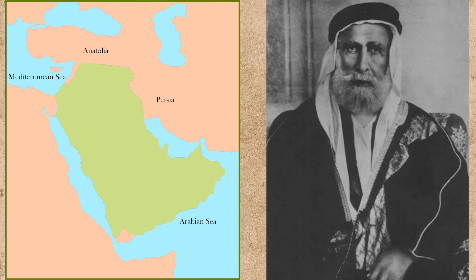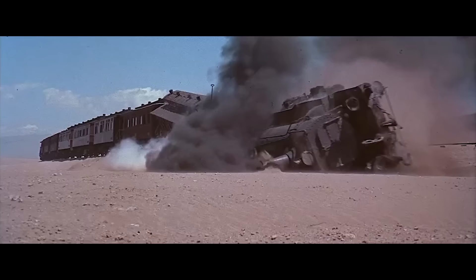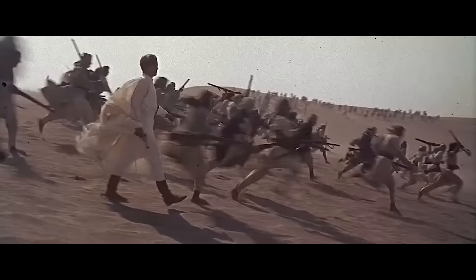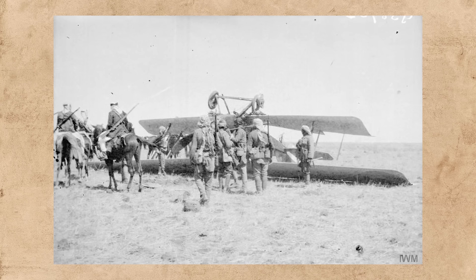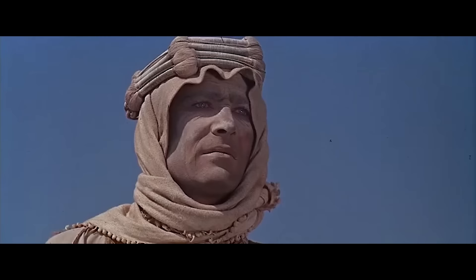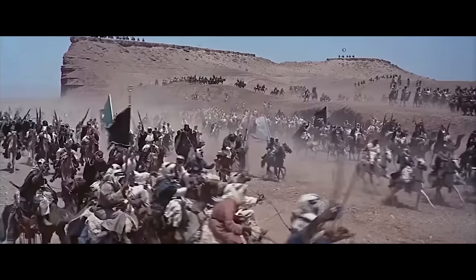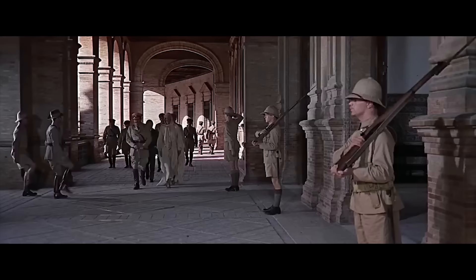The Sharif, buoyed by the hope of independence, kept his end of the bargain, spearheading the Arab revolt against the Ottomans in the Hejaz, Transjordan and Syria from 1916 until the end of the war in 1918. The British backed the Sharif in his fight by providing military assistance. The famed T.E. Lawrence, better known as Lawrence of Arabia, served as a liaison between the British and Arab armies.